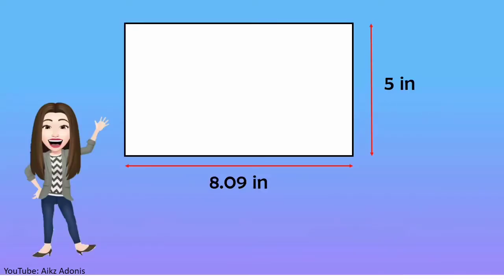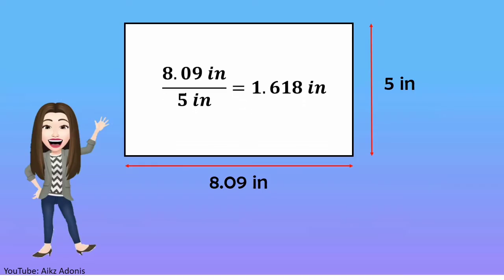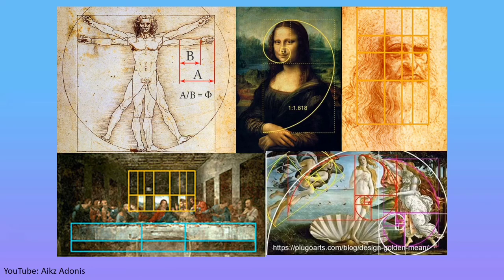The golden ratio is commonly used to calculate perfect spirals, rectangles, arcs, and other figures. For example, a rectangle with a length of 8.09 inches and a width of 5 inches is in the golden ratio, because 8.09 divided by 5 is equal to 1.618. Since the discovery of the golden ratio,